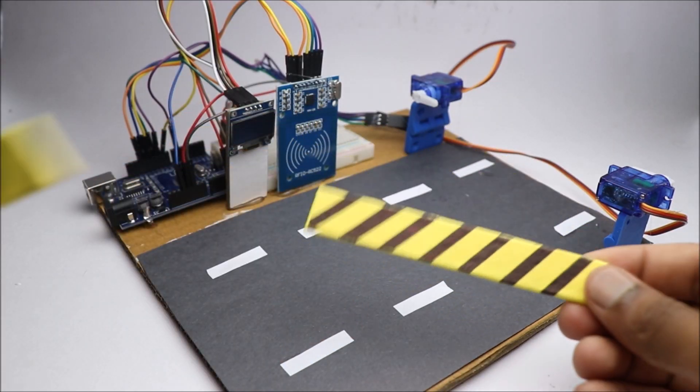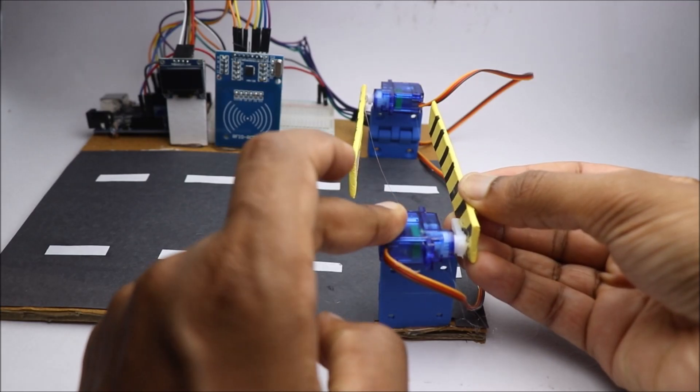Finally, finish the project by adding barricades to the horns of the microservo.